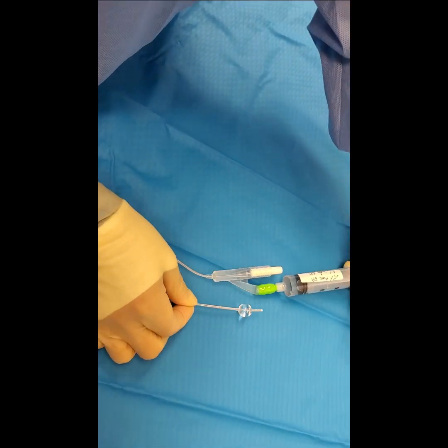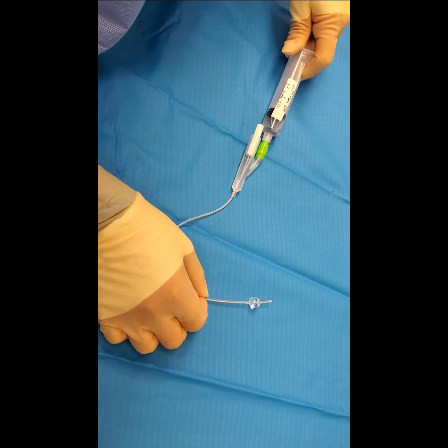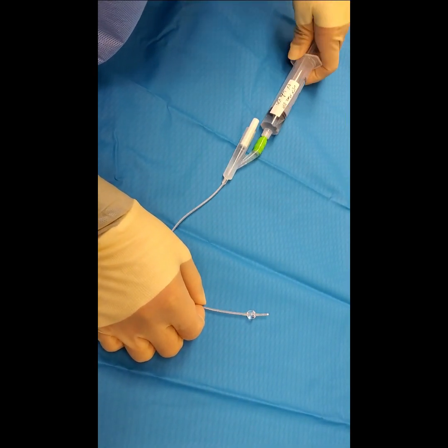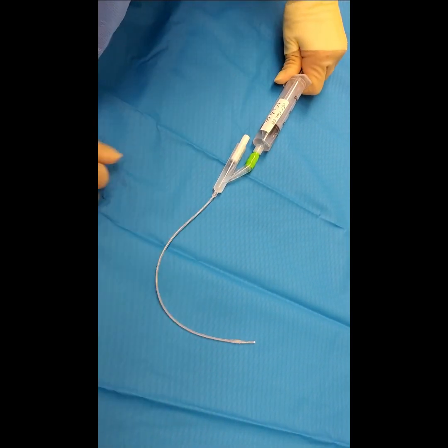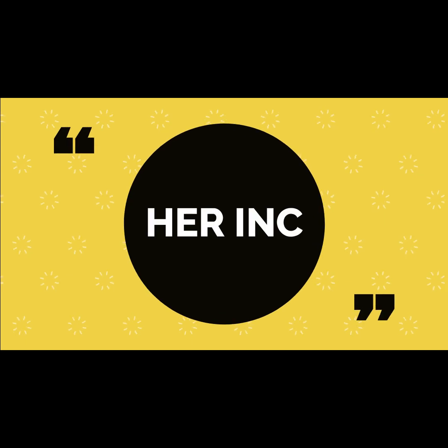Once the balloon is removed, you are typically given progesterone to stimulate a period, and then a follow-up sonohistogram or hysteroscopy can be repeated to make sure the uterine cavity is completely healed.